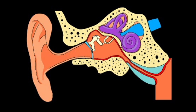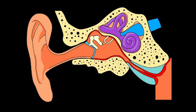To understand glue ear it is helpful to have some knowledge of the anatomy of the middle ear. The middle ear is an air-filled space encapsulated in bone directly behind the eardrum, made up of three tiny lever-like bones that carry sound vibrations from the eardrum to the inner ear. The middle ear is connected to the back of the nose by a narrow channel called the eustachian tube. This tube normally remains closed and will only open when you yawn or swallow to allow equalization of middle ear pressure.